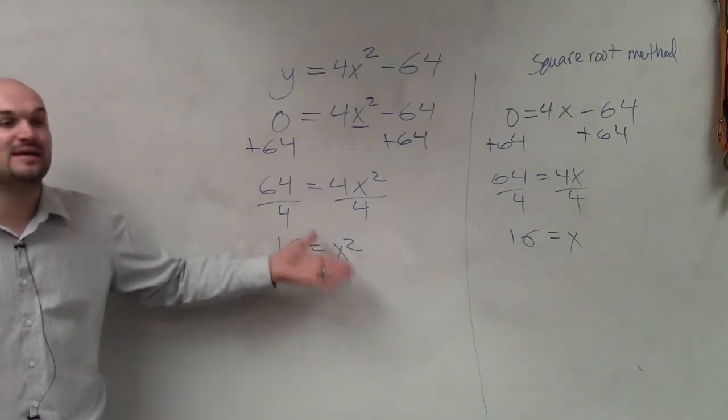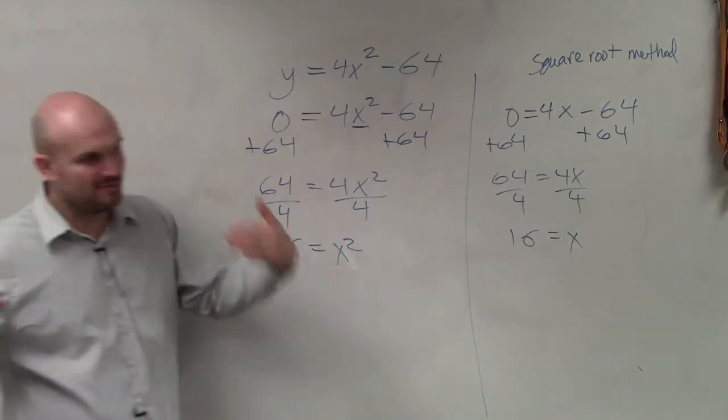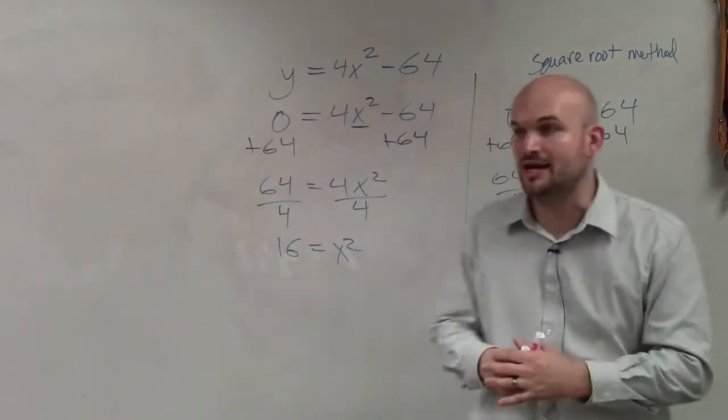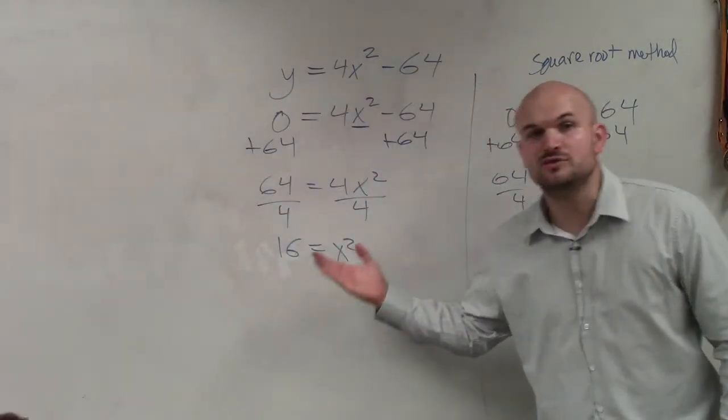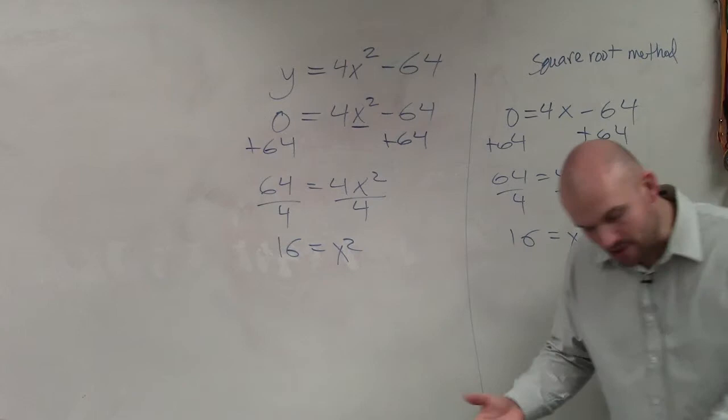So, now, we need to determine, how do we undo the squaring function? And for those of you that have been watching in this class for over and over again, to undo the squaring function, we do what? Square root.